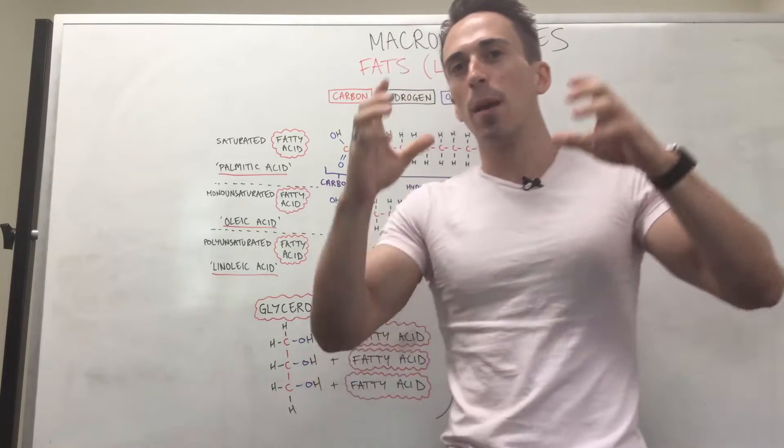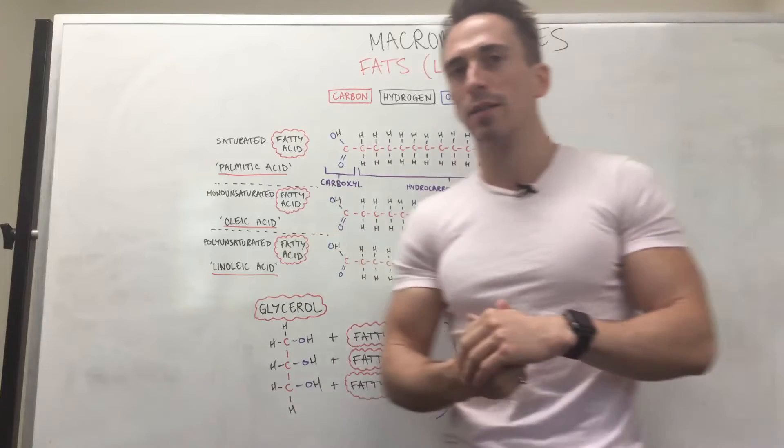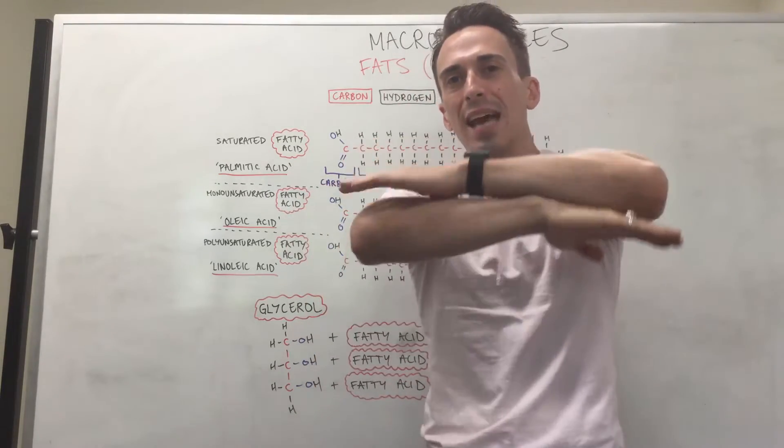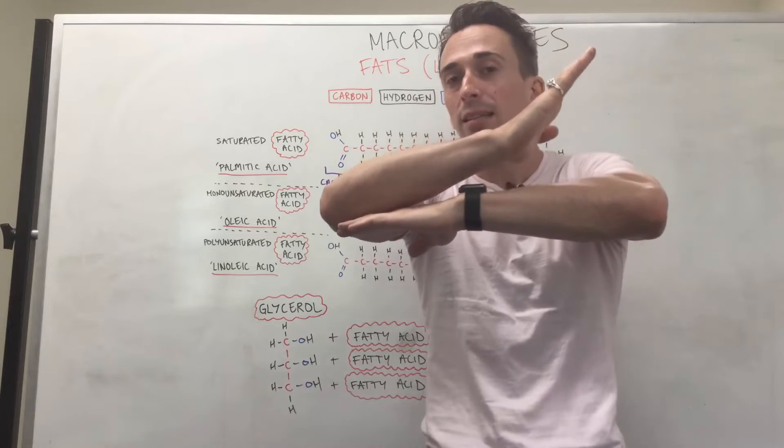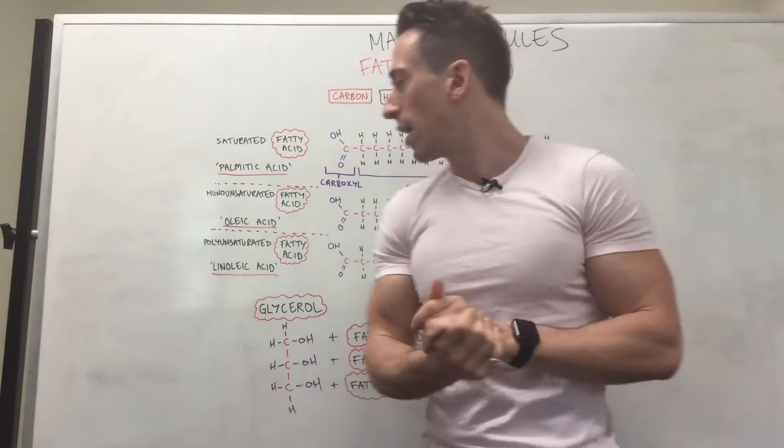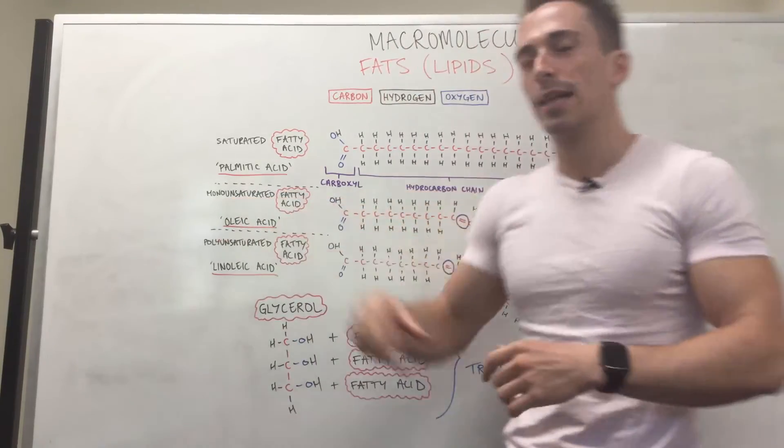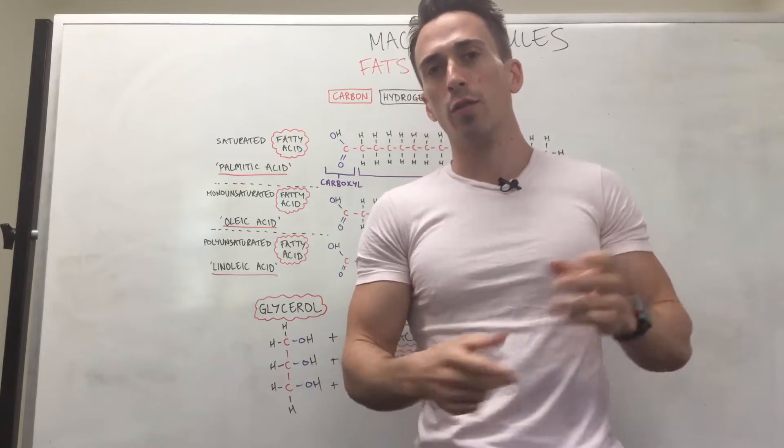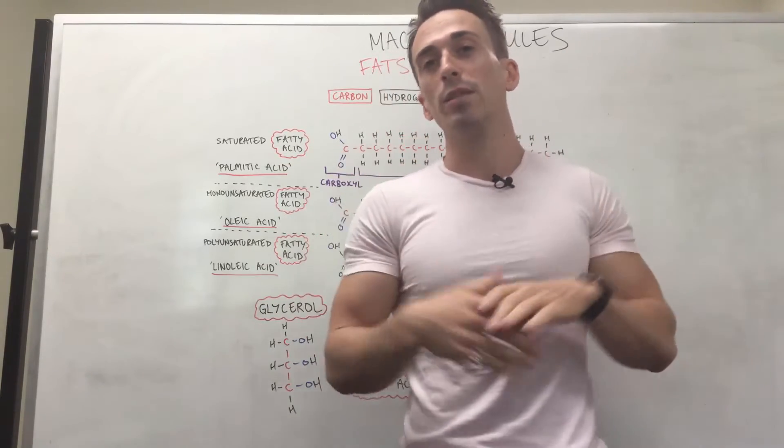And that means that if you were to get multiple monounsaturated fatty acids and stack them on top of each other, they don't actually stack nice and tight because of these kinks present. Now this means that they are liquid at room temperature. And what you'll find is these monounsaturated fatty acids are predominantly plant oils. So this includes peanut oils and olive oils as well. Again, liquid at room temperature.